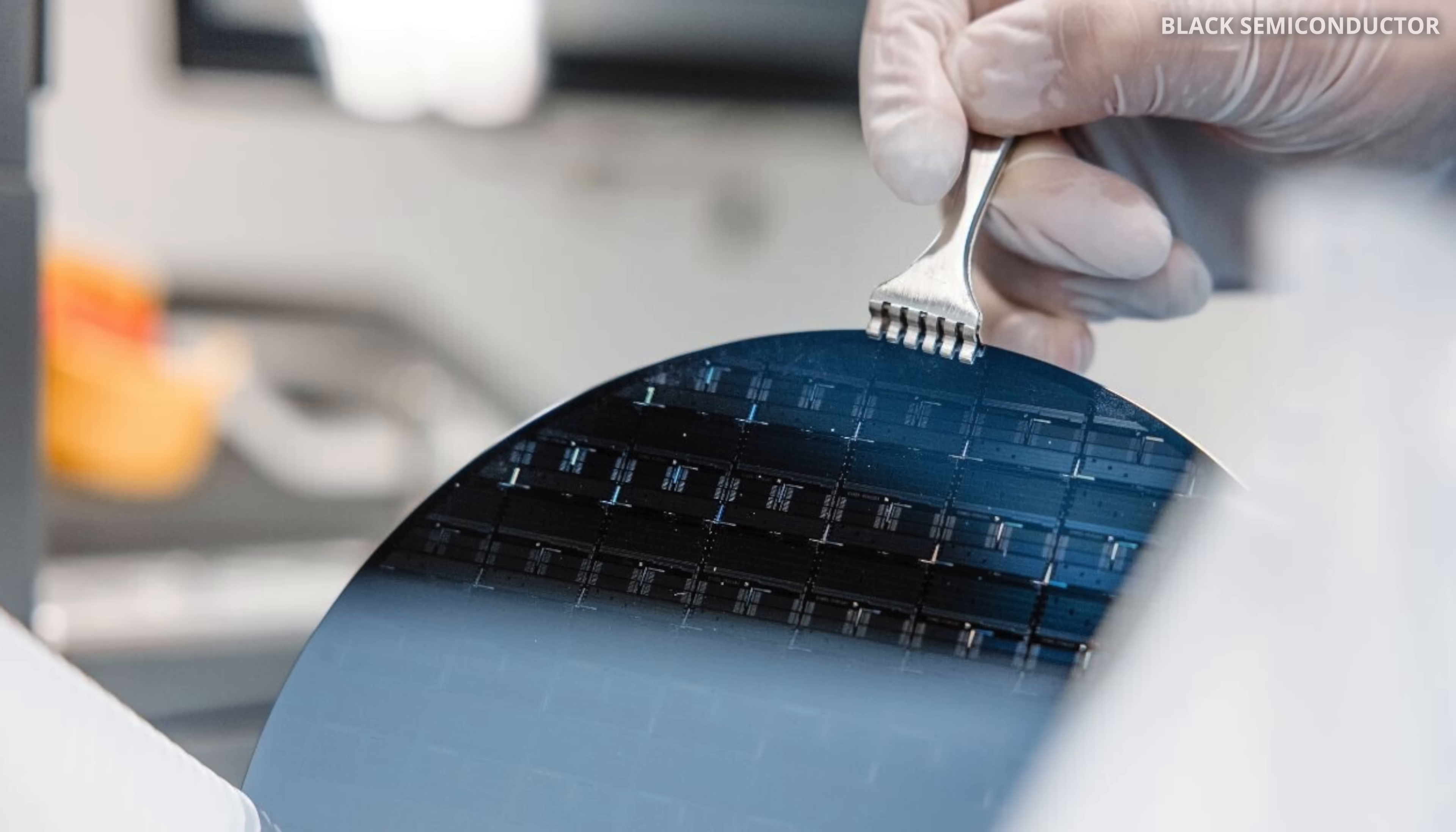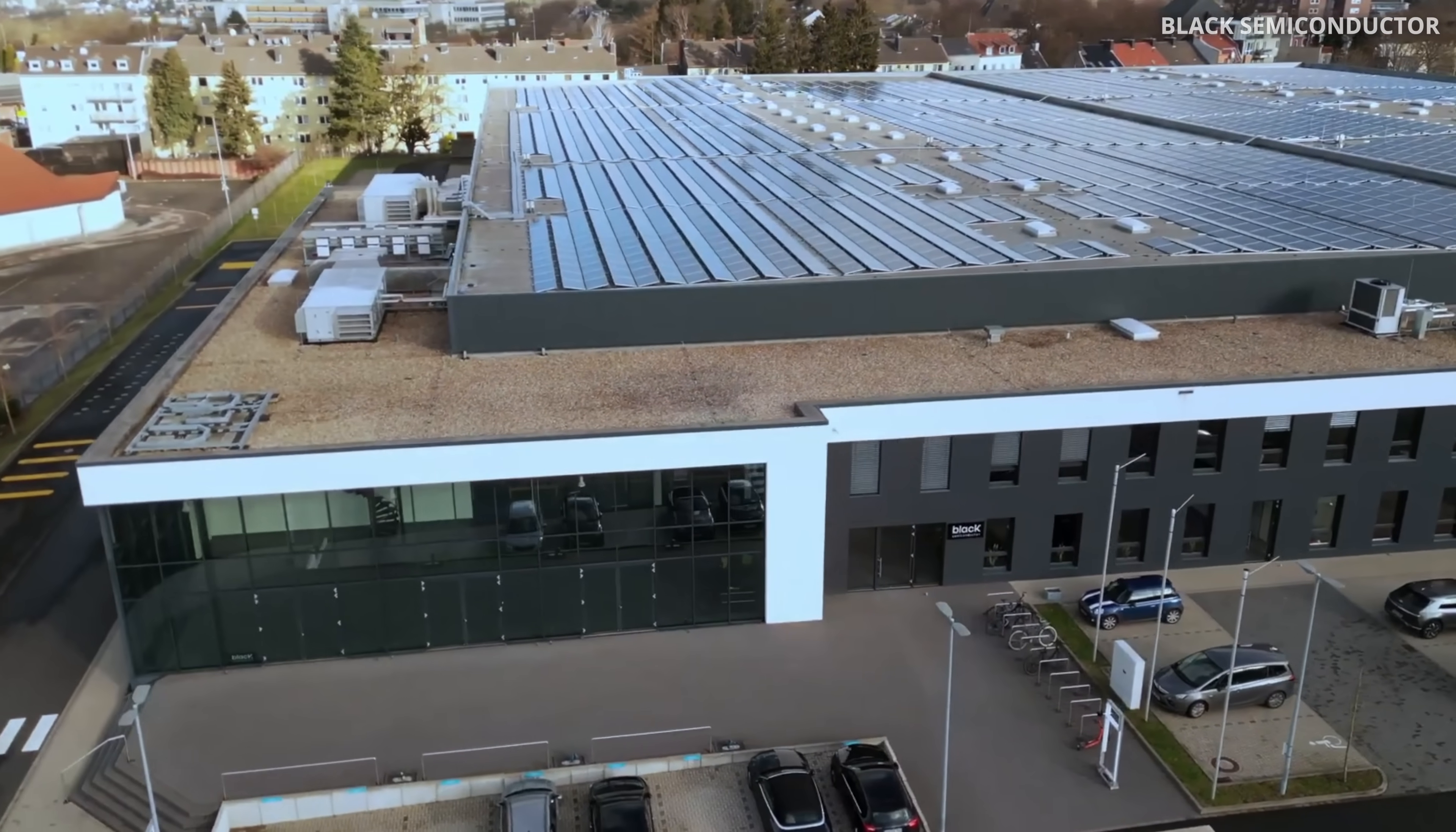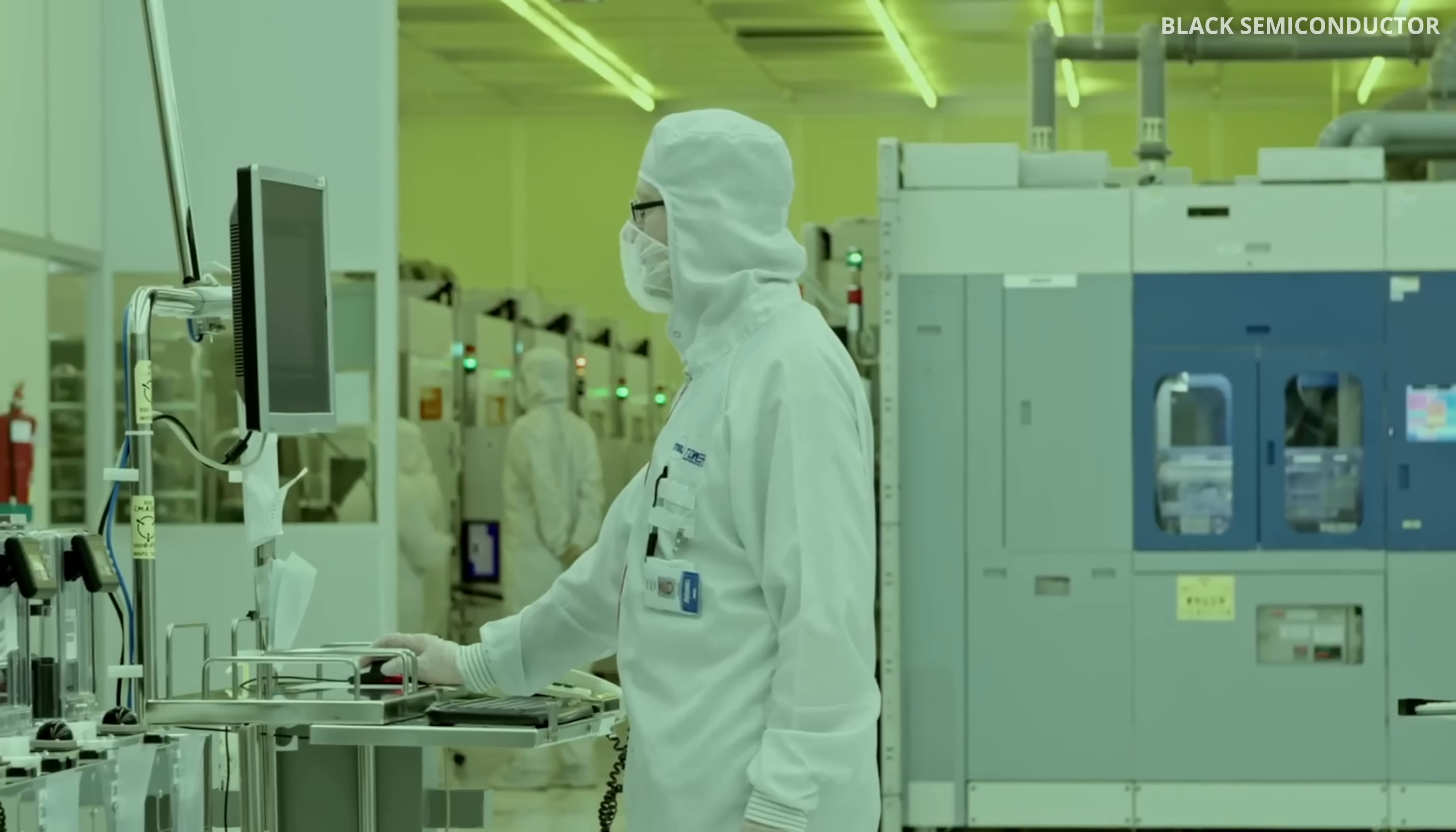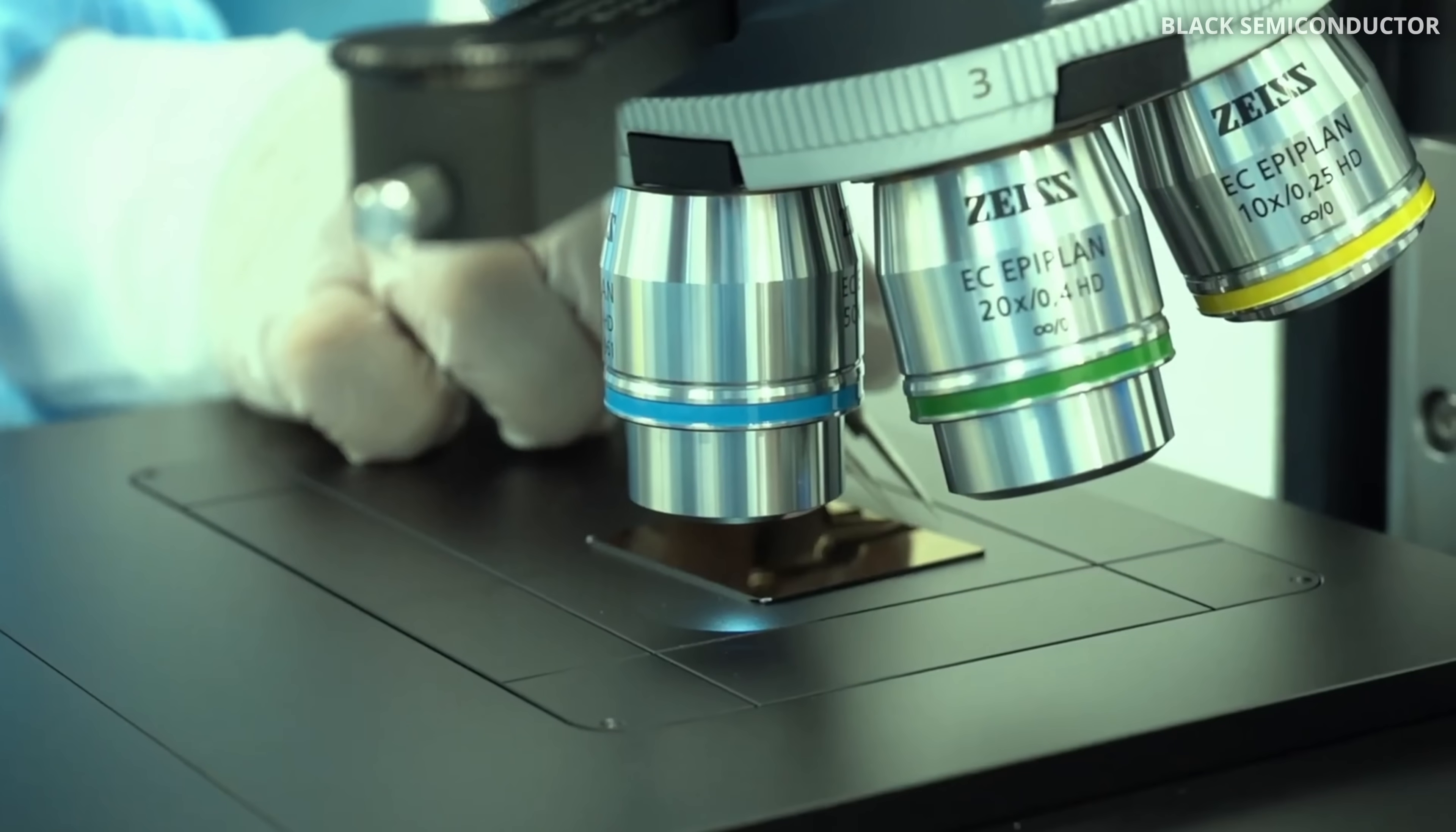They're building graphene-based optical fabric, optical chip, for data centers to replace copper. And not just that. They're also building a graphene manufacturing facility. A full-scale fab. Right now, this is a huge step forward. And we will talk more about it in details towards the end of the video.